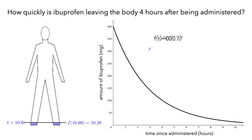We see that at 4 hours, the amount of ibuprofen remaining in the body is about 101.6 mg. We can also see this on the graph.